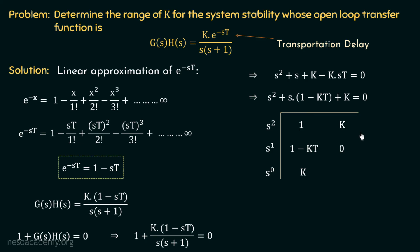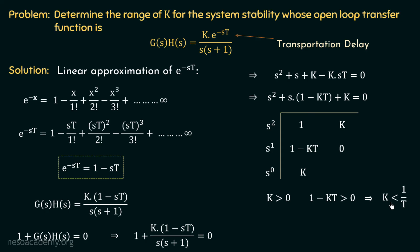Let us now apply the Routh stability criteria. For the system to be stable, there should be no sign changes in the first column of the Routh array. The first term in the column is 1, which is positive, so the remaining terms must also be positive for zero sign changes. Therefore, k should be greater than 0, and 1 minus kt should also be greater than 0. Transposing kt gives k less than 1 over t. Combining both inequalities, the range of k for the system to be stable is 0 less than k less than 1 over t.